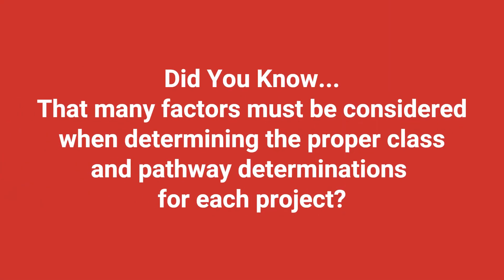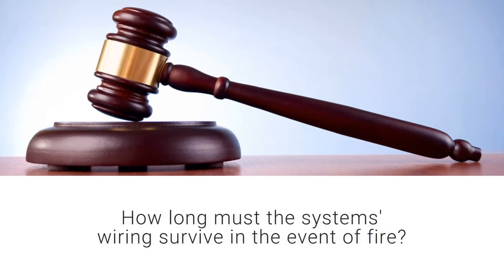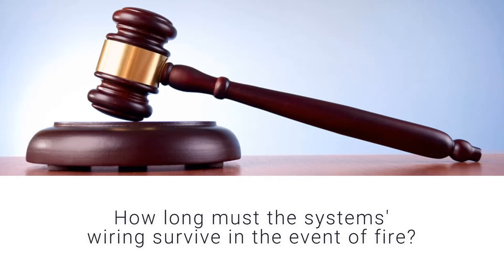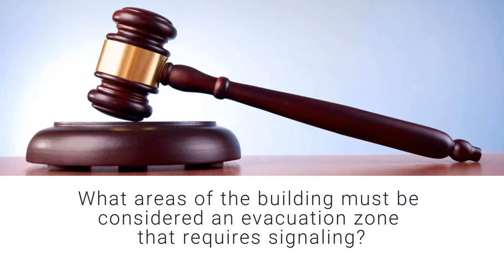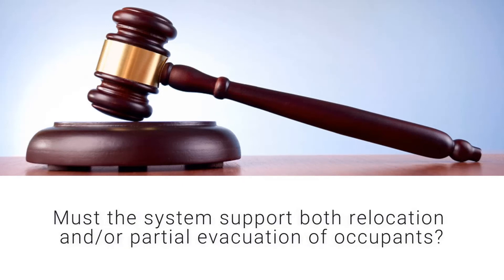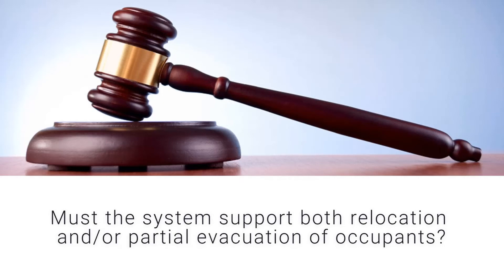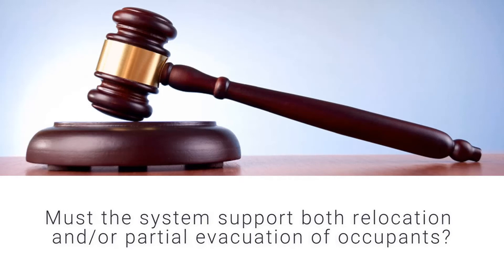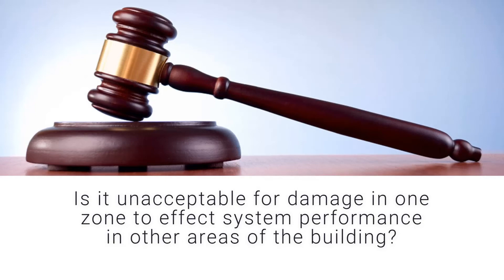Many factors must be considered when determining the proper class and pathway determination for each project, and determination ultimately resides with the local authority having jurisdiction. These factors include: How long must the system's wiring survive in the event of fire? What areas of the building must be considered an evacuation zone that requires signaling? Will both emergency alarm and voice communication be required? Must the system support both relocation and/or partial evacuation of occupants? Is it unacceptable for damage in one zone to affect system performance in other areas of the building?